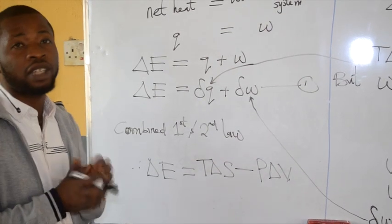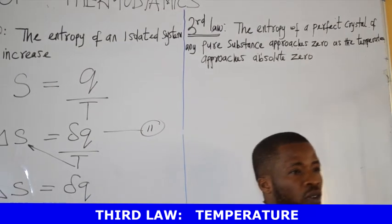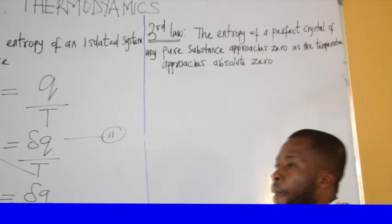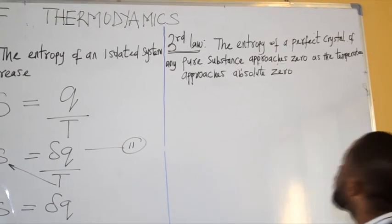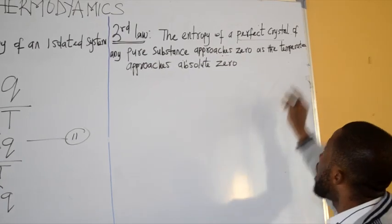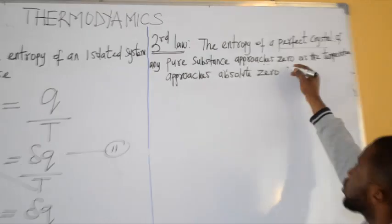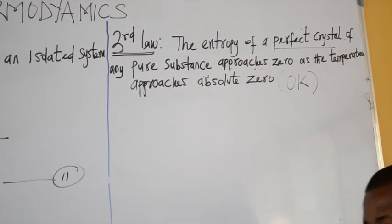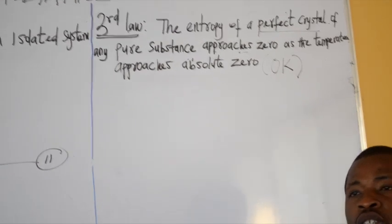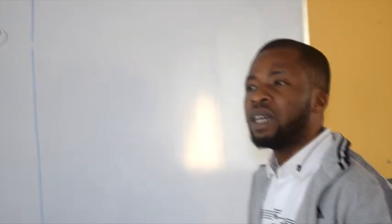Having understood the first and second law, the third law talks about a physical quantity which is called temperature. The third law simply states that the entropy of a perfect crystal of any pure substance approaches zero as the temperature approaches absolute zero. Absolute zero is also known as zero Kelvin. Absolute zero temperature is the lowest temperature that is theoretically possible, and of course, it is very difficult for any system to attain absolute zero temperature.